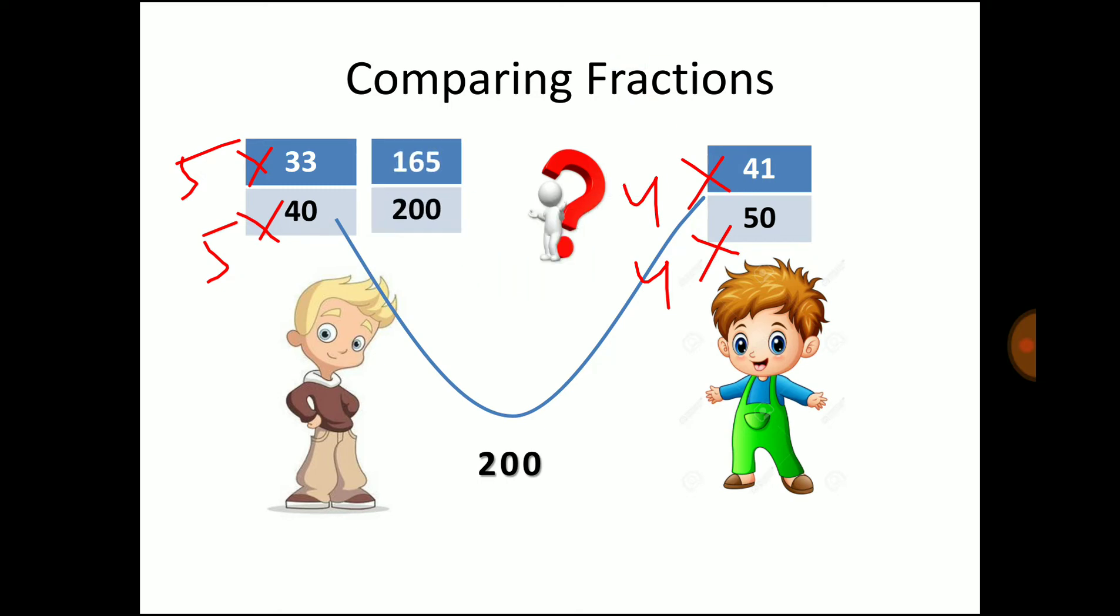Now after multiplying you will get 165 out of 200 which is the mark of Ramesh and 164 out of 200 is the mark of Suresh. So obviously who scored high mark? The mark of Ramesh is higher compared to the mark of Suresh.